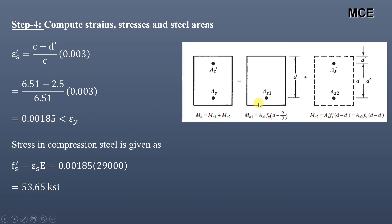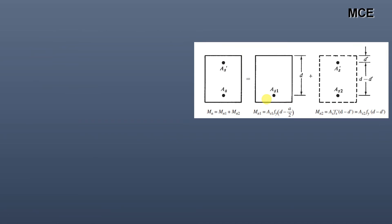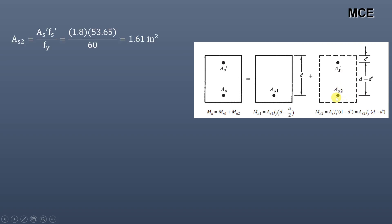We can now calculate the design moment strength of the beam, but for that we need the steel areas. Since compression steel is used, we break the nominal moment into two parts: the first part is the resistance of the compression concrete and the balancing tensile reinforcement, and the second part is the nominal moment capacity of the compression steel and the balancing additional steel. We calculate As2, which is AS' times FS' divided by FY, equal to 1.8 times 53.65 divided by 60, which equals 1.61 inch square. As1 equals total steel area minus As2, which is 6 minus 1.61, equal to 4.39 inch square.